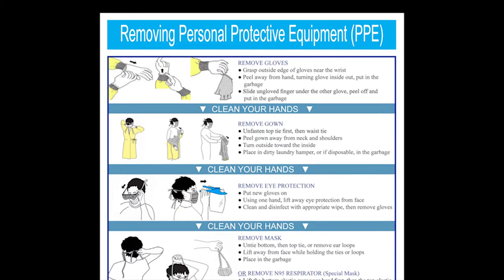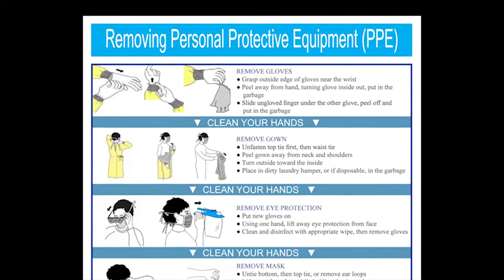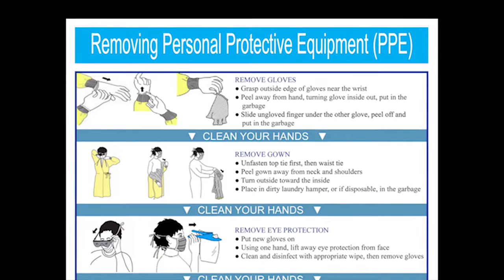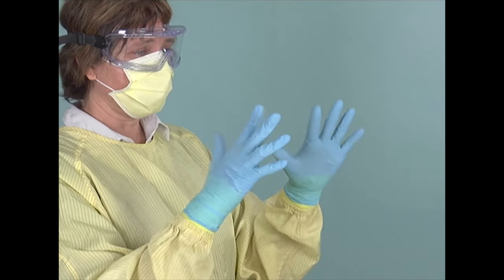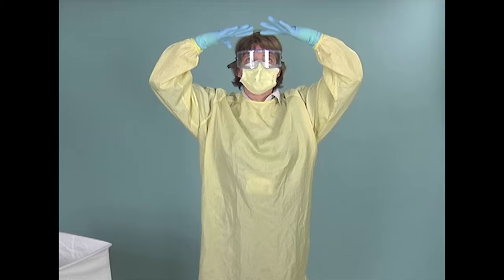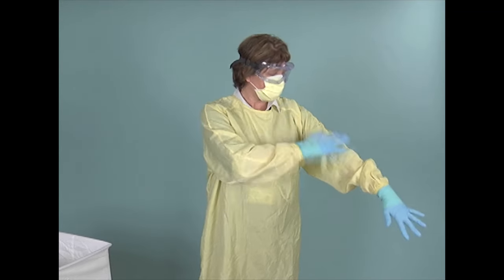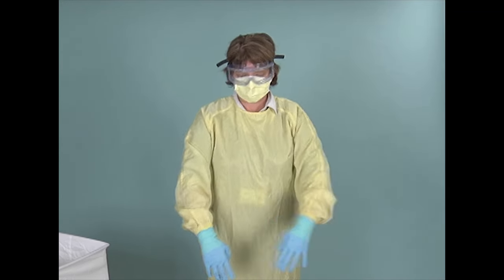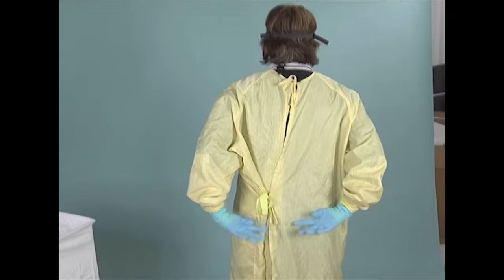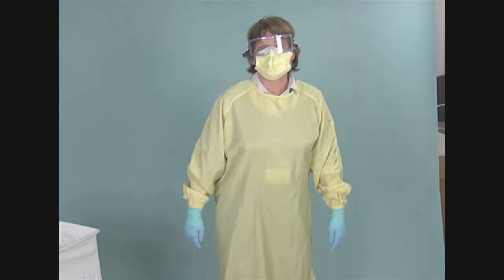The majority of PPE must be removed before entering the anti-room or hallway. This will prevent contamination of the anti-room or hallway. First assess contaminated area of your body for normal conditions. The entire front of the gown, gloves, masks or respirator, front of goggles or protective eyewear and the back of the gown below the bottom tie.